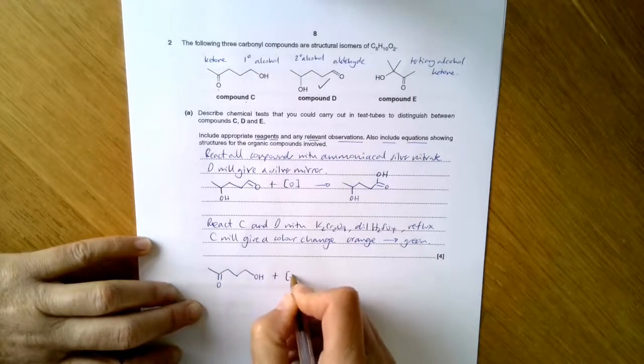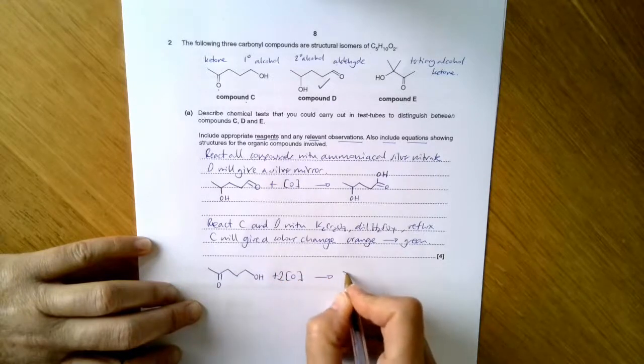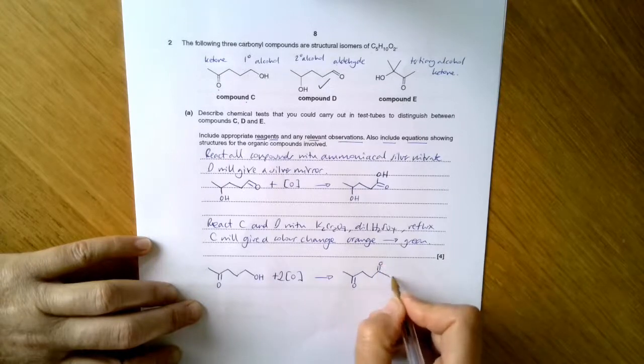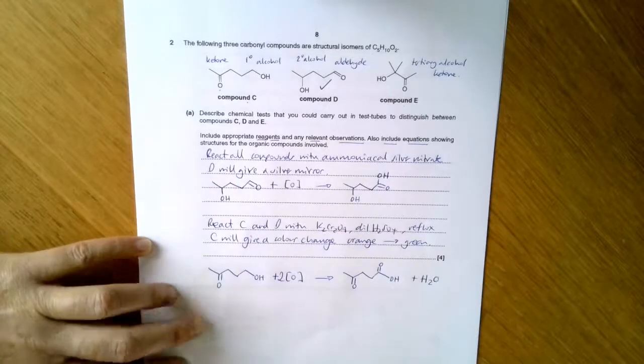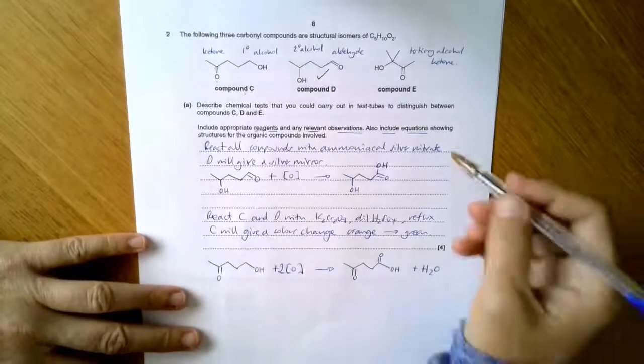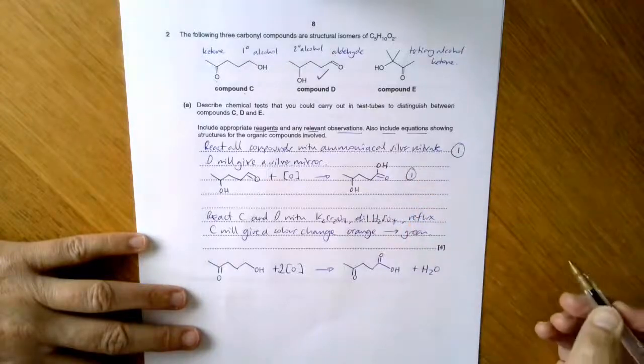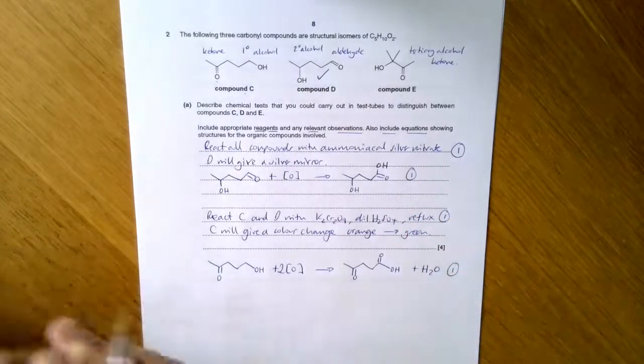So an equation for that. Only doing an equation for C. Oxidation again. Primary alcohol, so it can be oxidised twice. And that will give me carboxylic acid and a water molecule. So how would the marks be assigned? So one mark for the test and the observations. One mark for the balanced equation. One mark for the test and observations. One mark for the balanced equation.